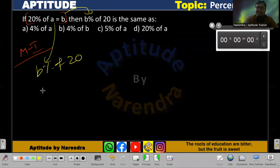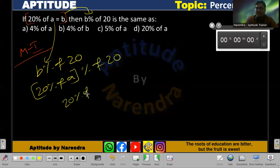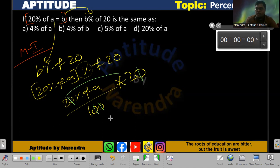In the place of b, substitute 20% of a. So b% of 20 becomes 20% of a, percentage of 20. For this percentage, divide with 100, then multiply by 20. Now what happens? Zeros get eliminated, leaving 2 times 4. The percentage remains as is.